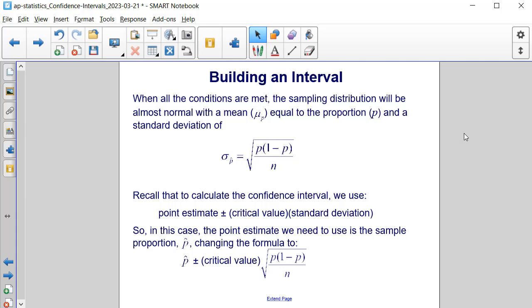Recall that to calculate the confidence interval we use the point estimate plus or minus the critical value times the standard deviation. So in this case, the point estimate we need to use is the sample proportion p-hat, and we change the formula to be p-hat plus or minus the critical value times the square root of p times the quantity 1 minus p, all divided by n. And notice this fraction is all within the square root.